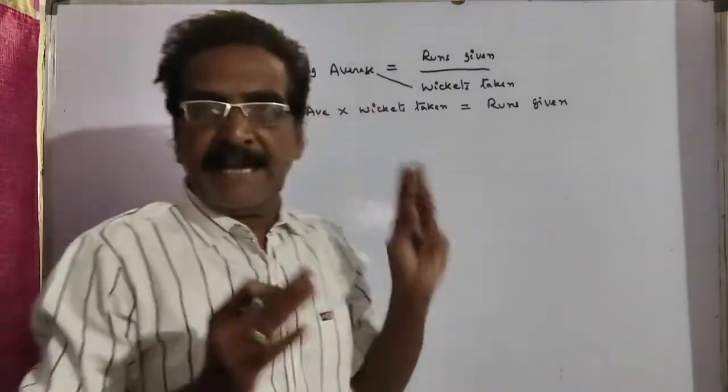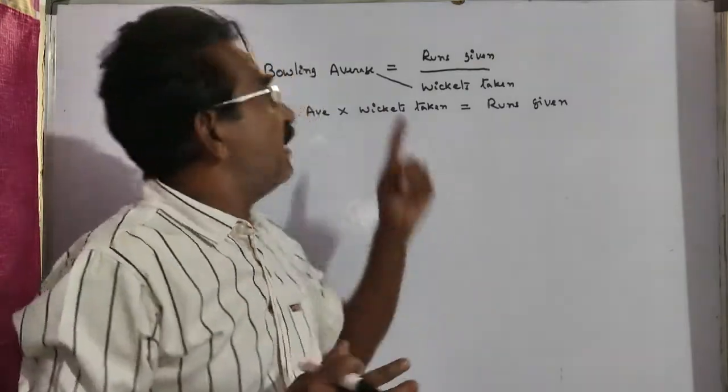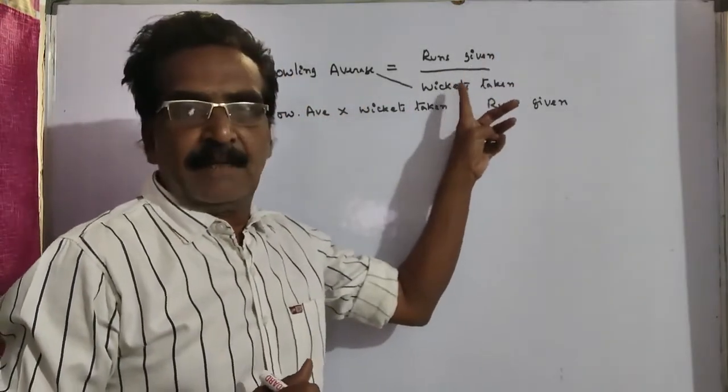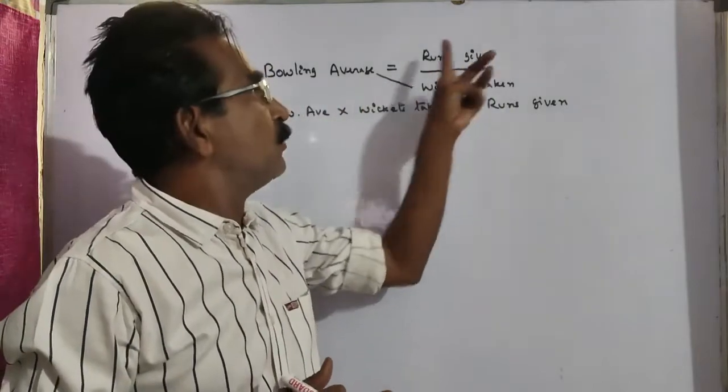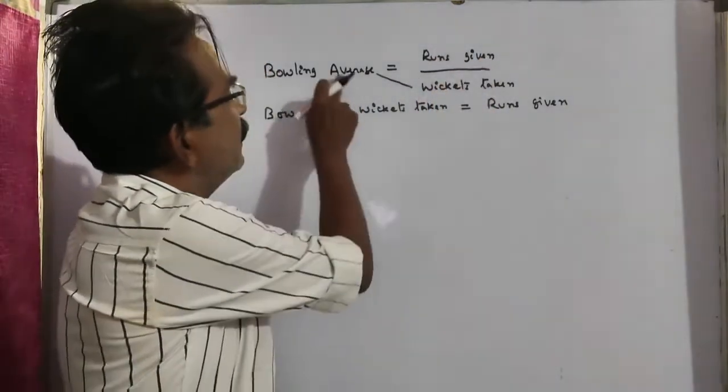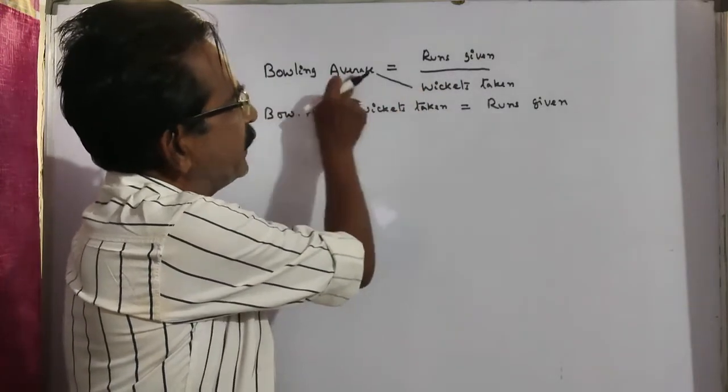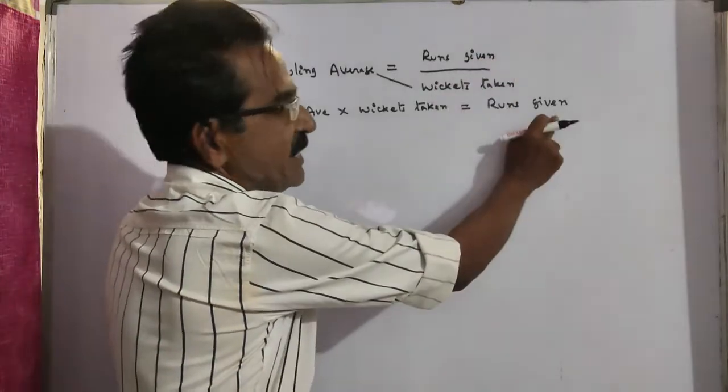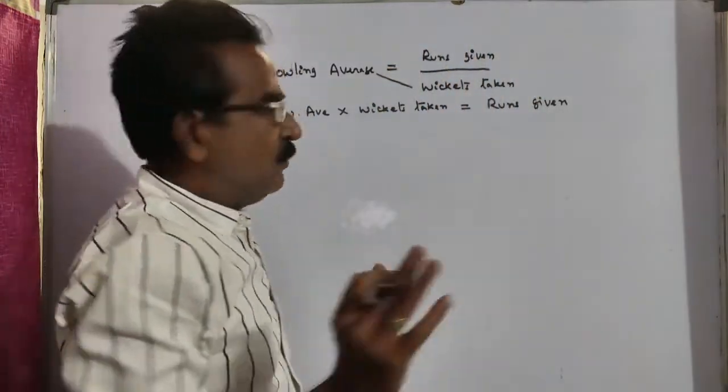See friends, first one thing. Bowling average of a cricketer. Bowling average is equal to runs given by wickets taken. Runs by wickets. It implies bowling average into wickets. Bowling average into wickets is equal to runs given.